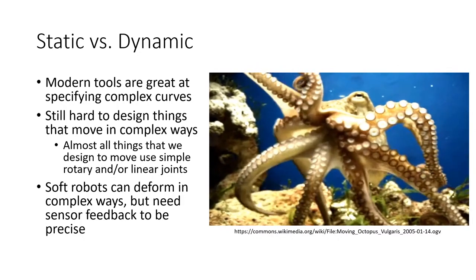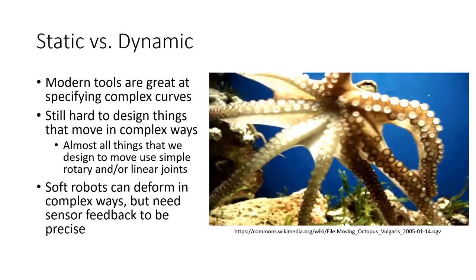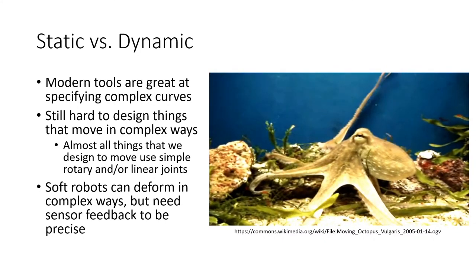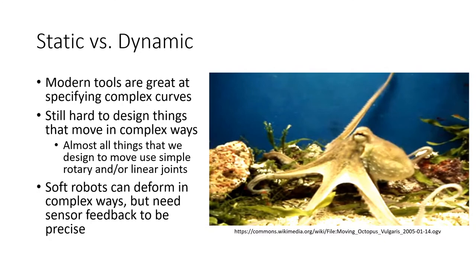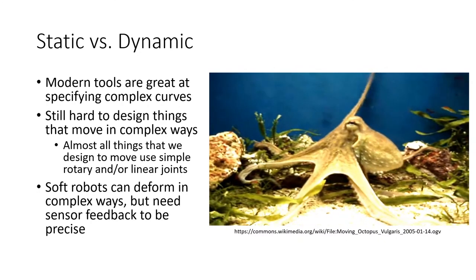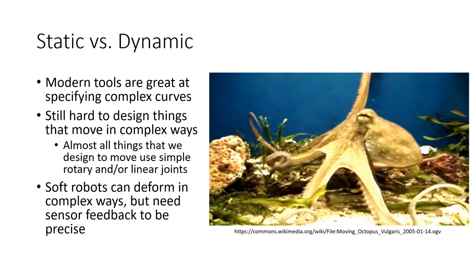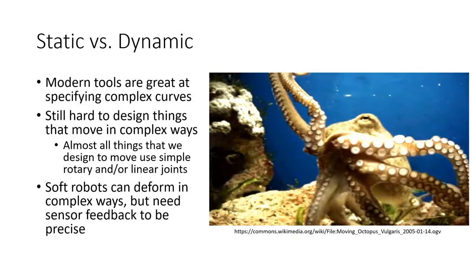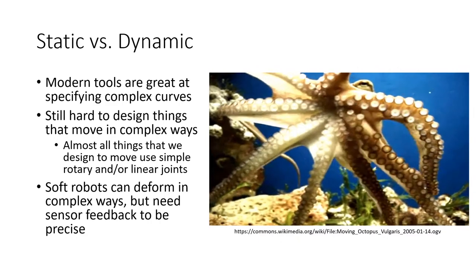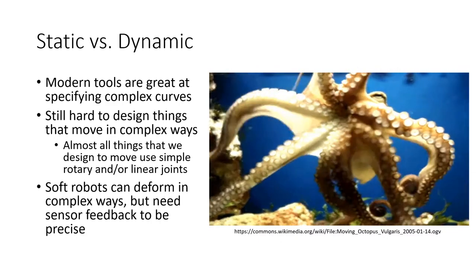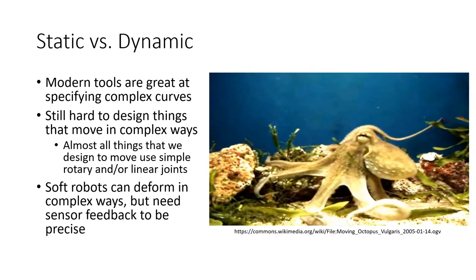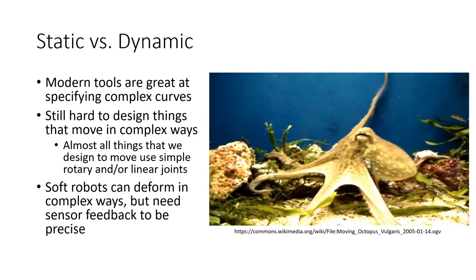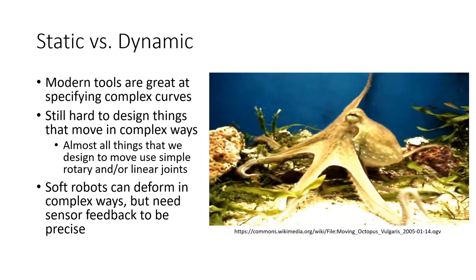You might think we don't have the actuators for complex motions, but in fact there's been a lot of work in soft robotics on arrays of actuators that can create very complex deformations. What's really missing is the ability to control them — they tend to be open loop. We really need sensing systems that can tell us what shape we currently have and drive it in a feedback loop to a very particular shape. That's what's missing.